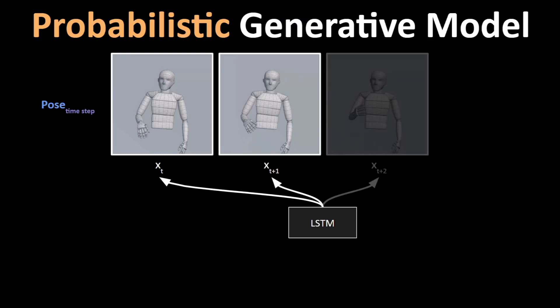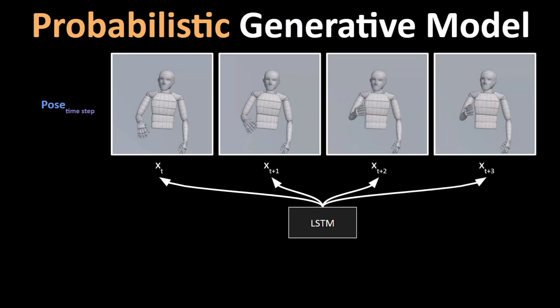It uses autoregressive models like an LSTM that is trained to learn motion as a time series distribution of poses. Here, it uses previous poses as part of the input to predict the next pose in combination with some other inputs.